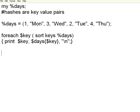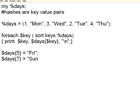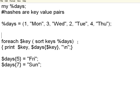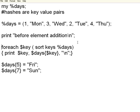The purpose of the hash table is to have a quick sort like this. Now, if I want to add elements — you have to use it as a variable. Dollar days, then I want to add the fifth element equal to Friday. Then dollar days within curly braces, the seventh element equal to Sunday. I am not giving contiguous keys — it can be 5, 6, 7, or just 5 and 7, in any order. Let me print before and after element addition.